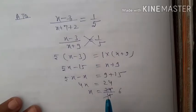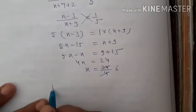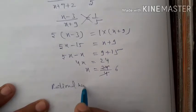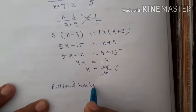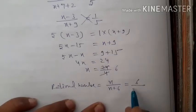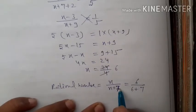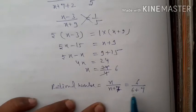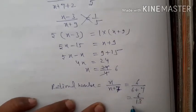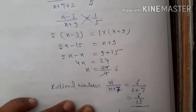x equals 6. Therefore the rational number equals x by (x plus 7), substituting x equals 6: that is 6 by (6 plus 7), which equals 6 by 13. So 6 by 13 is your rational number and your answer.